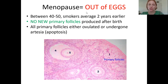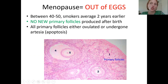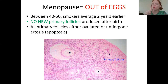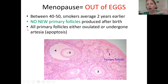In the ovaries, all of the eggs that you're ever going to have, you're born with them — you don't make more eggs through life. They're going to be arrested in prophase one as the primary follicles. Some will be selected to start developing, only one will actually be ovulated, and the rest will die off through a process called atresia.